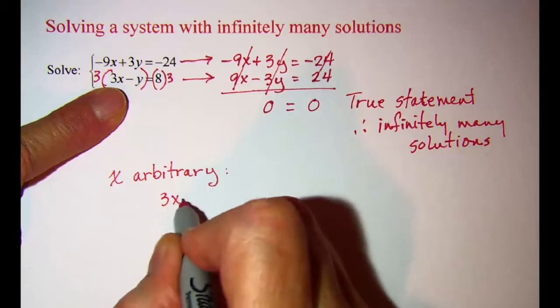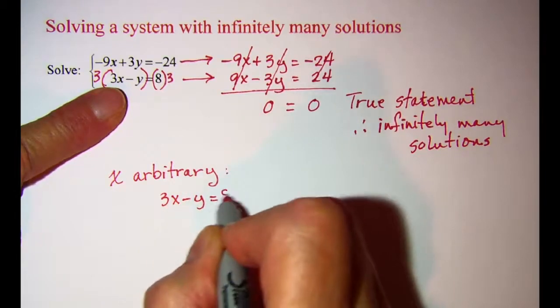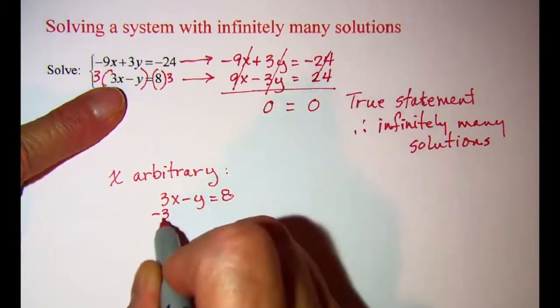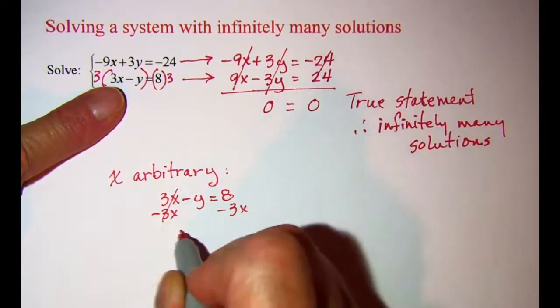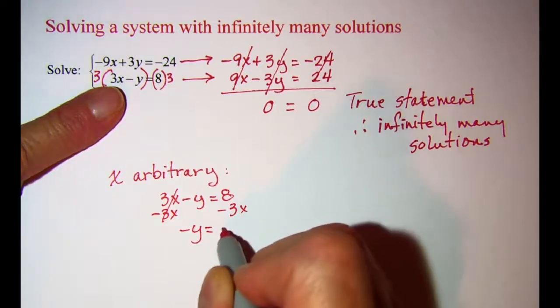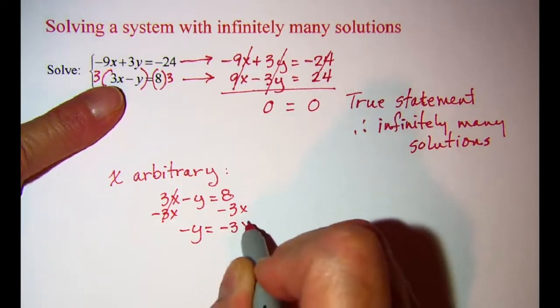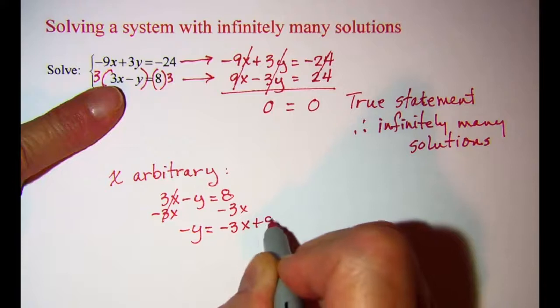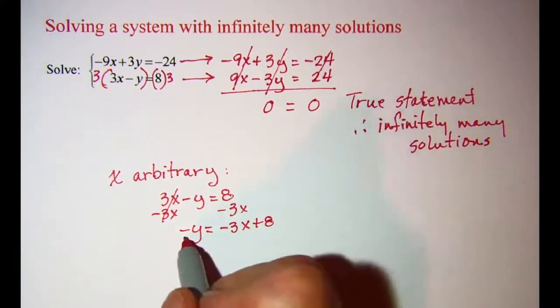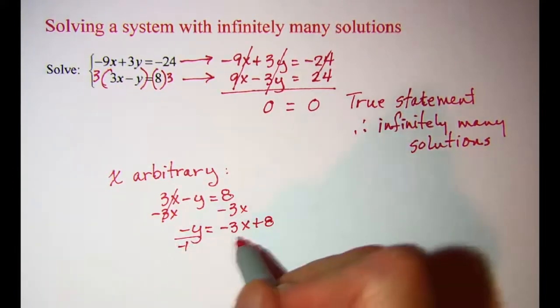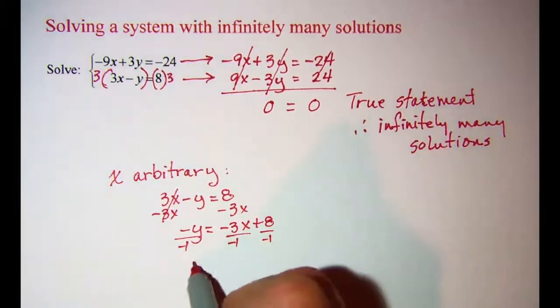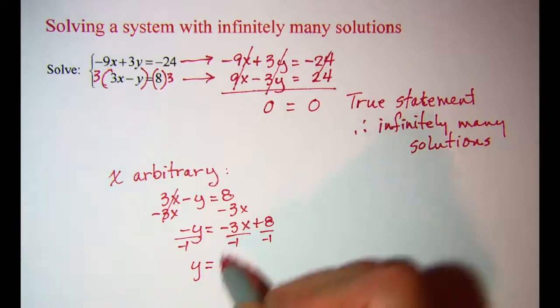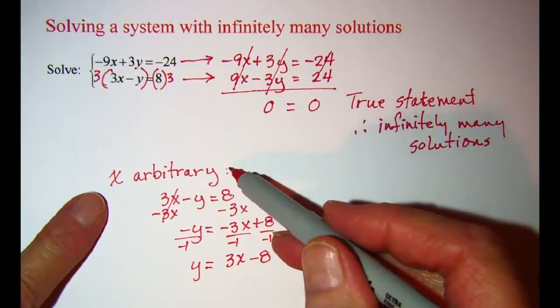Subtract 3x from both sides. And I have negative y equals negative 3x plus 8, and then divide through by negative 1.